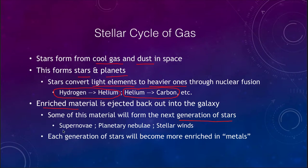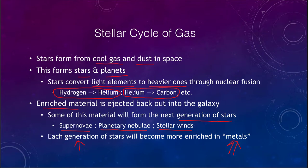How is it ejected? Supernovae are one example — when a star explodes. But even for smaller stars, planetary nebulae form around low-mass stars and can send some material back out into space. Stellar winds are also constantly putting material back into space. Each generation of stars will be more enriched in what astronomers call metals — anything that is not hydrogen or helium.